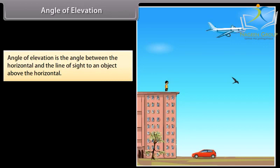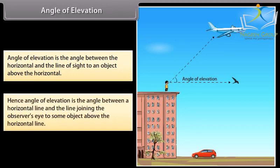In this picture, an observer is standing at the top of a building and looking straight ahead at the birds which are in the horizontal line. The observer must raise his eyes to see the airplane which is in the slanting line. This line is also called as line of sight. The angle formed between the two lines is called the angle of elevation. Hence, angle of elevation is the angle between a horizontal line and the line joining the observer's eye to some object above the horizontal line.